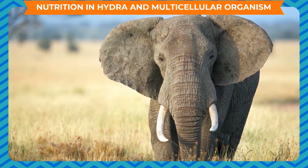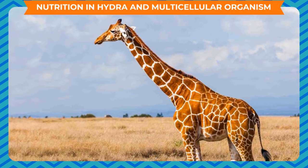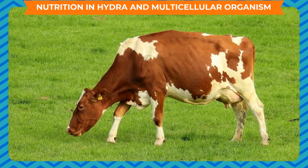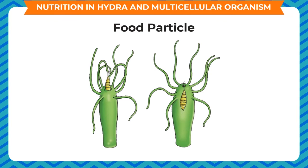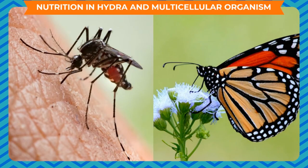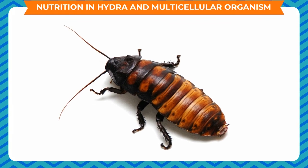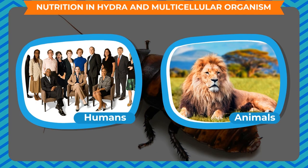Nutrition in Hydra and multicellular organisms: In higher multicellular animals, all the steps of heterotrophic nutrition change according to the type of animal and its food, especially the mode of ingestion. In paramecium, which is also a unicellular organism, the food is pushed into an opening called the oral groove by hair-like projections called cilia. In hydra, which is a multicellular microscopic organism, the food is brought into the body cavity by projections called tentacles. In insects such as mosquito and butterfly, a long tubular structure called proboscis is used to suck blood and nectar respectively. The cockroach has hardened teeth-like structures that are used to crush the food before taking it in. Big animals and humans have teeth for grinding the food material.